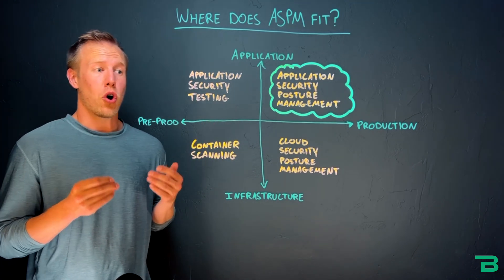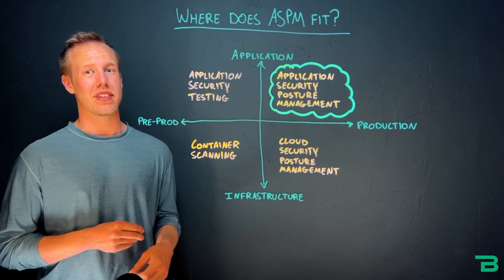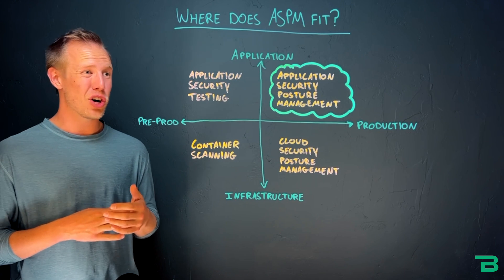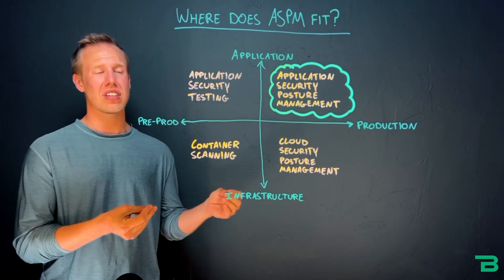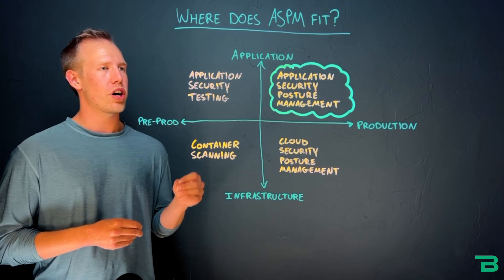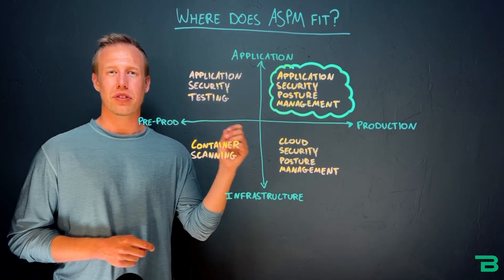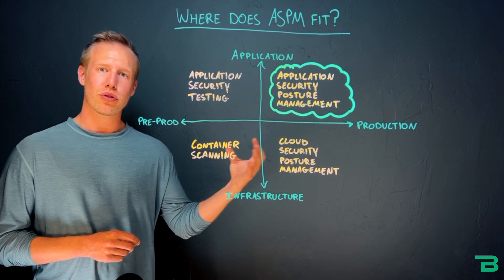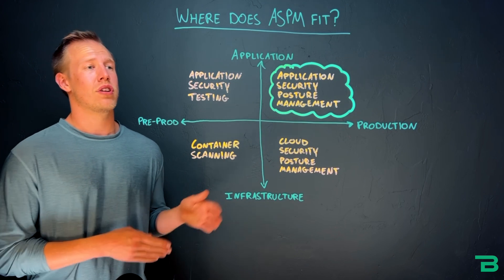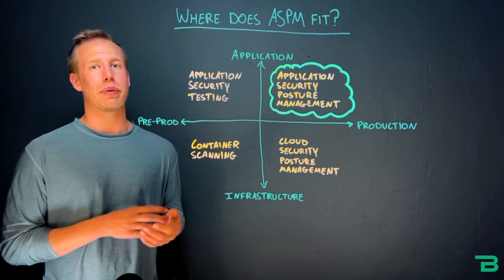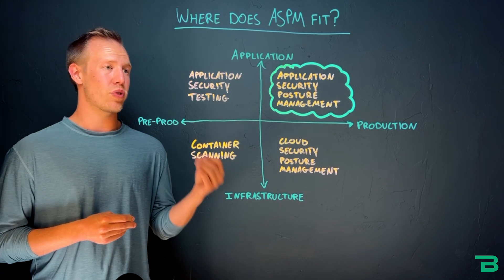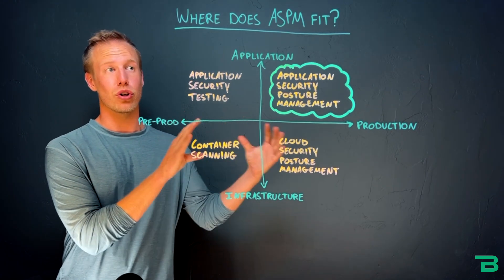So rather than hoping that it worked, what ASPM allows you to do is say: what's my actual risk posture in production? I know I have code out there receiving millions of queries every day, every hour. We want to know, is my security posture in production actually improving over time? What are the biggest risks? Which assets do I need to focus on the most? Are my efforts earlier in the pipeline, in pre-prod, actually making a difference in the risk associated with my code living in the real world?